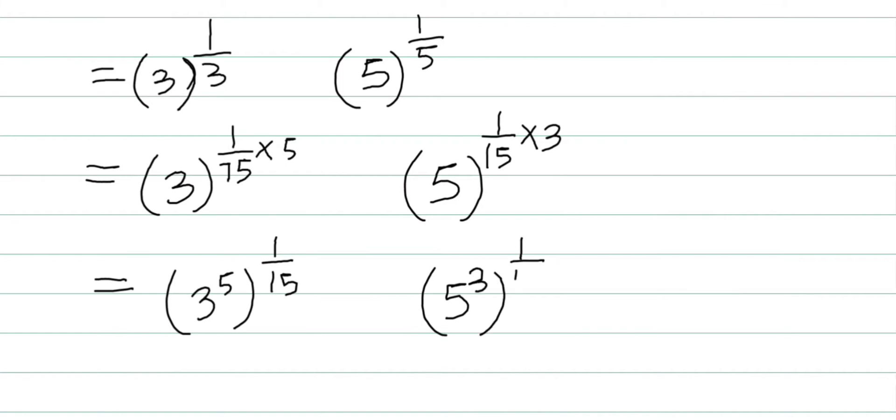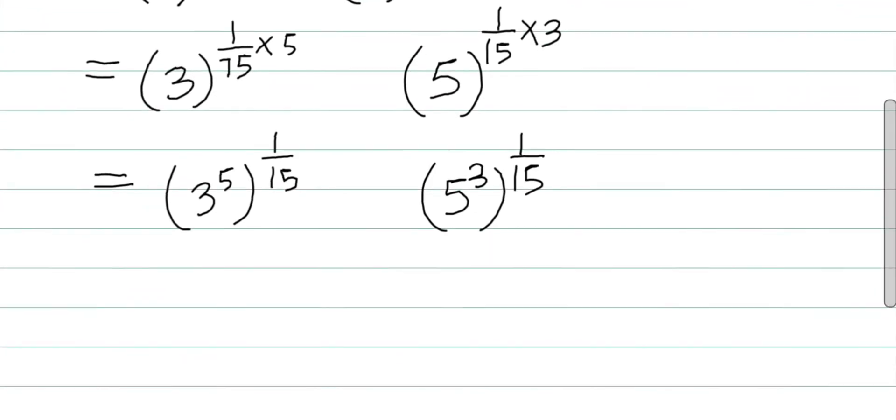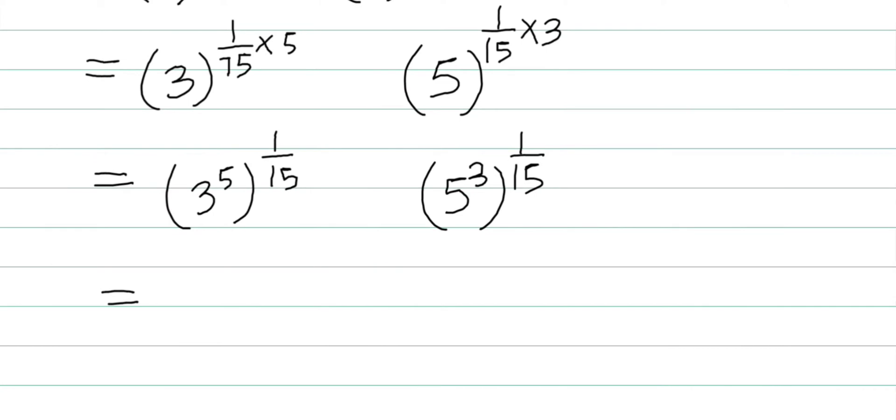So I'll write 243^(1/15), and 5 cubed is 125, so we have 125^(1/15). Now the powers are equal but the bases are different, making it quite easy to compare.